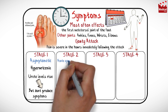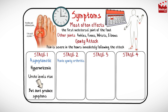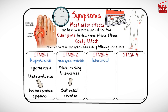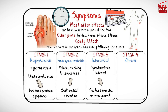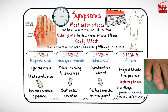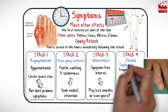The second stage is marked by acute gouty arthritis, during which the patient experiences painful swelling and tenderness — symptoms that usually lead the patient to seek medical attention. The third stage is the intercritical stage: after the initial attack, the person enters a symptom-free interval that may last months or even years. The fourth stage is the chronic stage, where gout attacks become frequent and polyarticular, affecting multiple joints at one time. Tophi — clusters of urate crystals — may develop in cartilage, synovial membranes, tendons, and soft tissues. This final unremitting stage is also known as tophaceous gout.